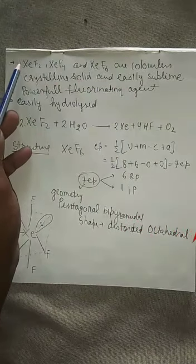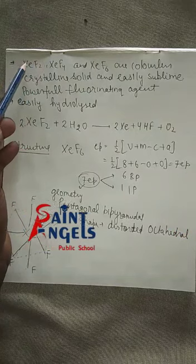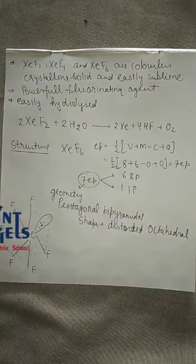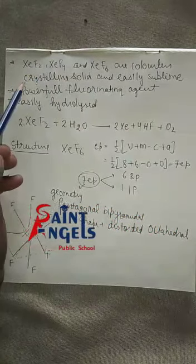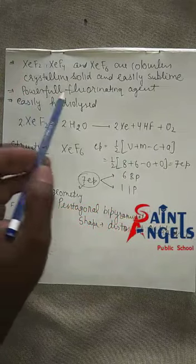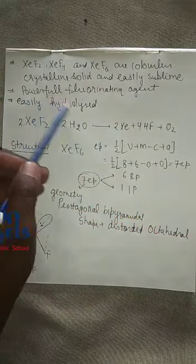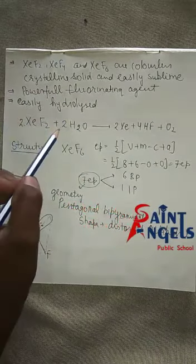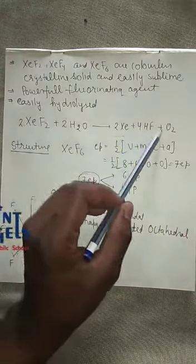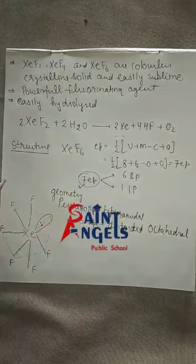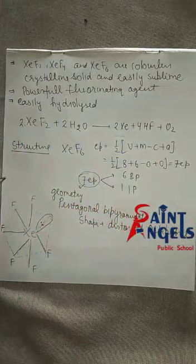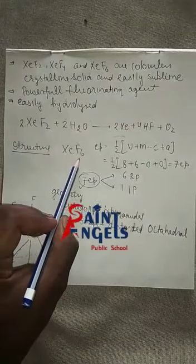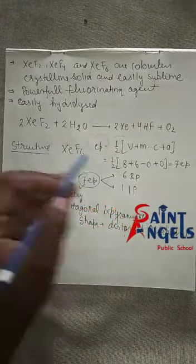XeF2, XeF4, and XeF6 are colorless crystalline solids and easily sublime. They sublime easily because noble gas compounds are not easily polarizable, so intermolecular forces are very low due to being less polar. They are powerful fluorinating agents because they can easily donate fluorine and can be easily hydrolyzed.